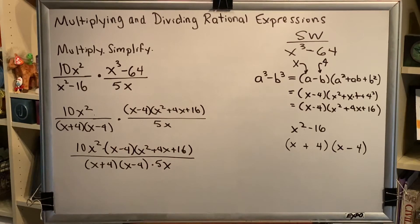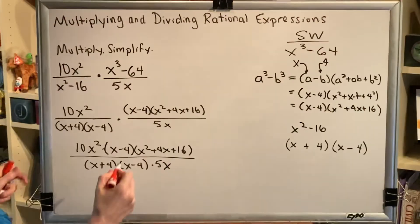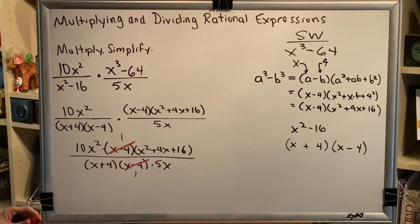Finally, we get to the reducing step. Anything that matches top and bottom can be canceled to 1. So for example, this x-4 and this x-4 can be canceled to 1. And we will make other similar algebraic simplifications.